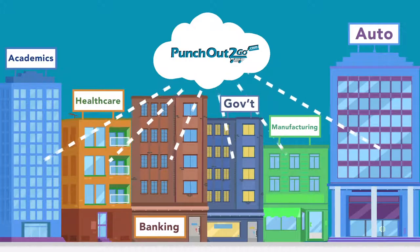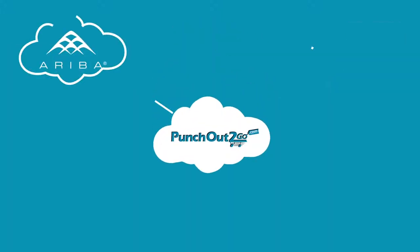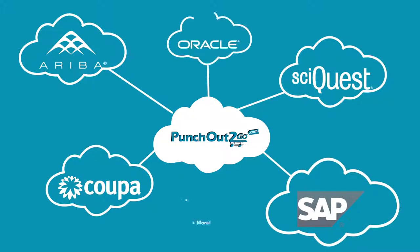With the Punch-Out2Go gateway, you can connect your website with buyers from any procurement platform like Ariba, SyQuest, Coupa, SAP, Oracle and more.